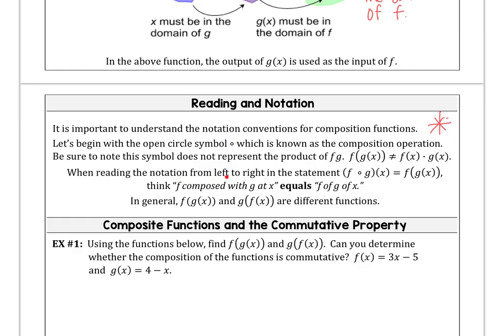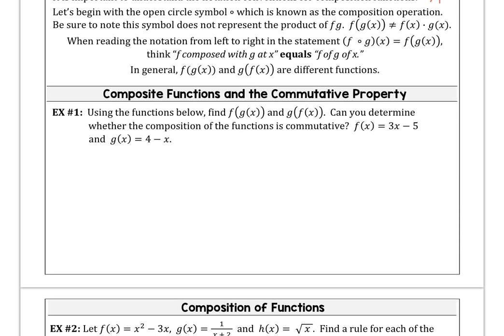When you read the notation from left to right, f of g of x, think of f composed with g at an x value — that equals f of g of x. There are two different functions when you compose f with g or g with f. They're not the same thing. Let's start by using the functions to find f of g of x and g of f of x and see if the compositions are commutative.